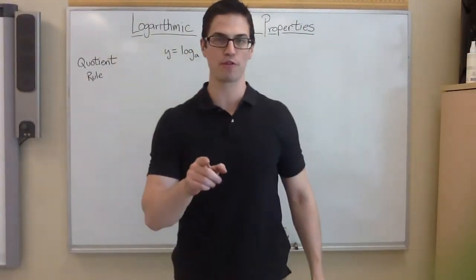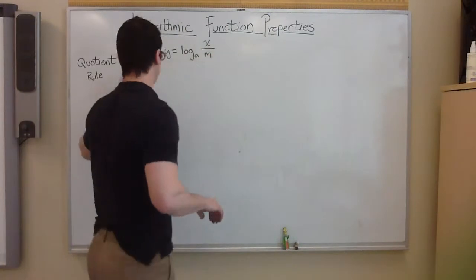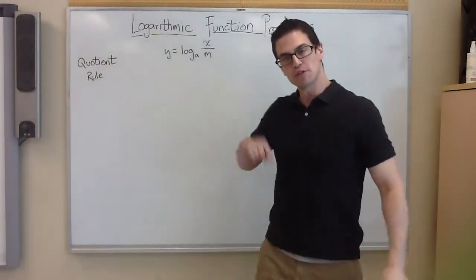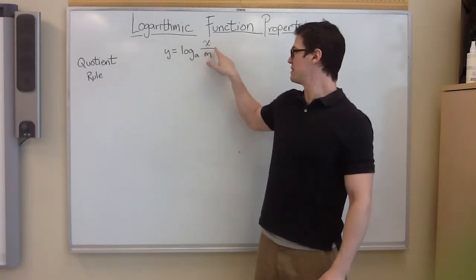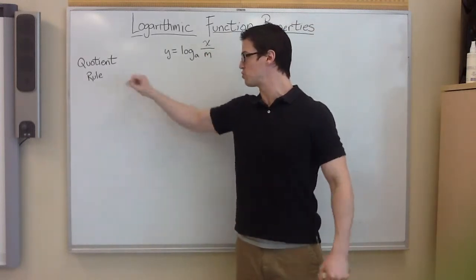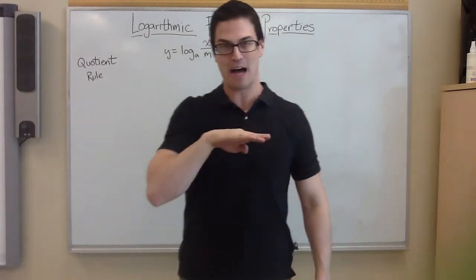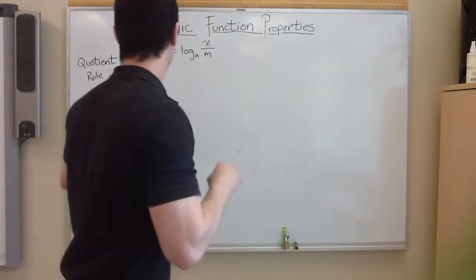Alright, last rule for the logarithmic function properties. It's called the quotient rule. If you understood the stuff from last time, where it was x times m, this time it's now x divided by m. So the last one was product rule, this one is quotient rule. Quotient means divide. So hopefully that makes sense.